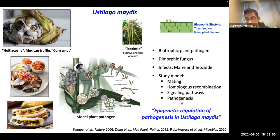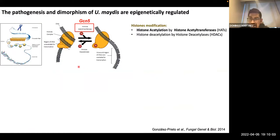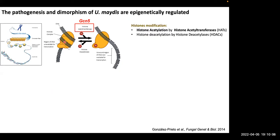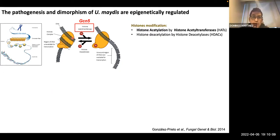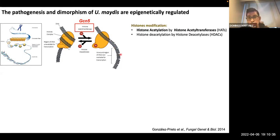In this presentation we are talking about the epigenetic regulation of pathogenesis in Ustilago maydis. In eukaryotic organisms, DNA is organized and compacted in nucleosomes — the basic structure of chromatin. These nucleosomes can undergo modifications when proteins such as histone acetyltransferases induce acetylation of the histones. This acetylation induces relaxation of the nucleosome, making the DNA available to transcription factors for expression of genes in that region.